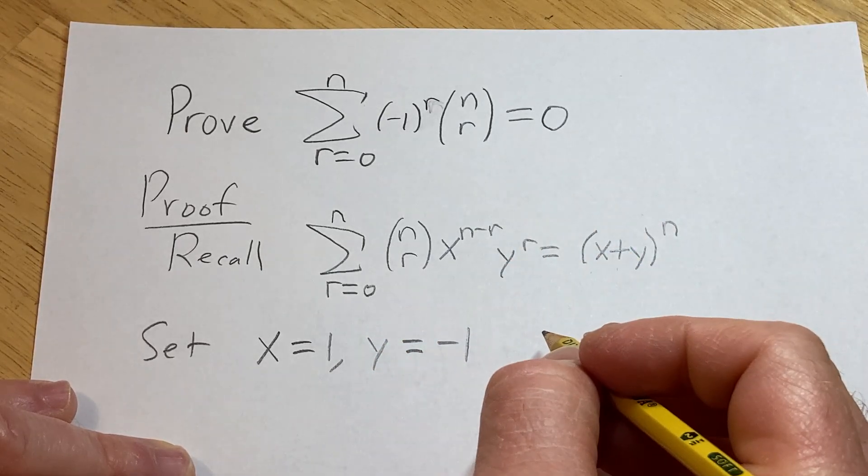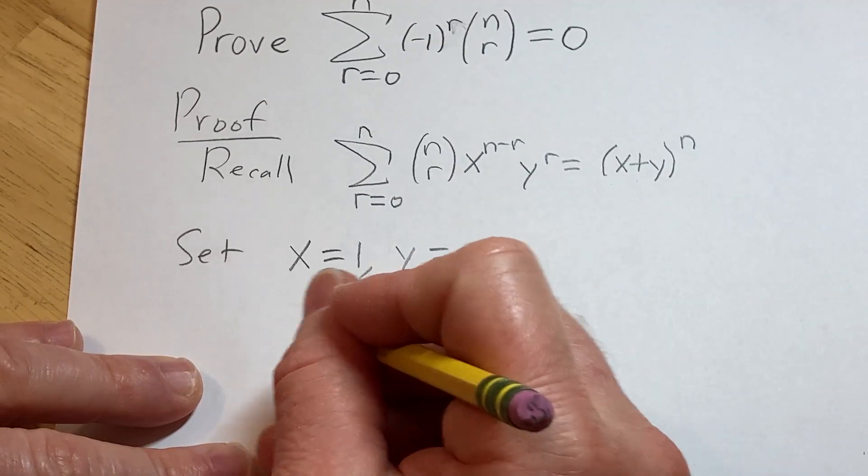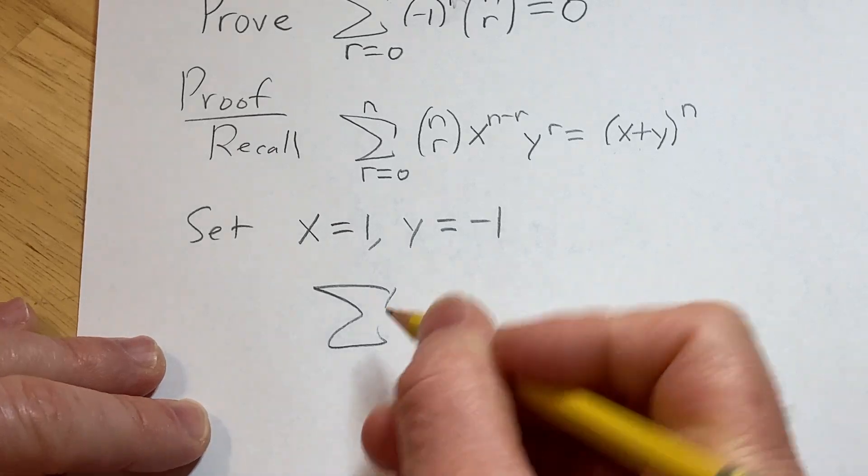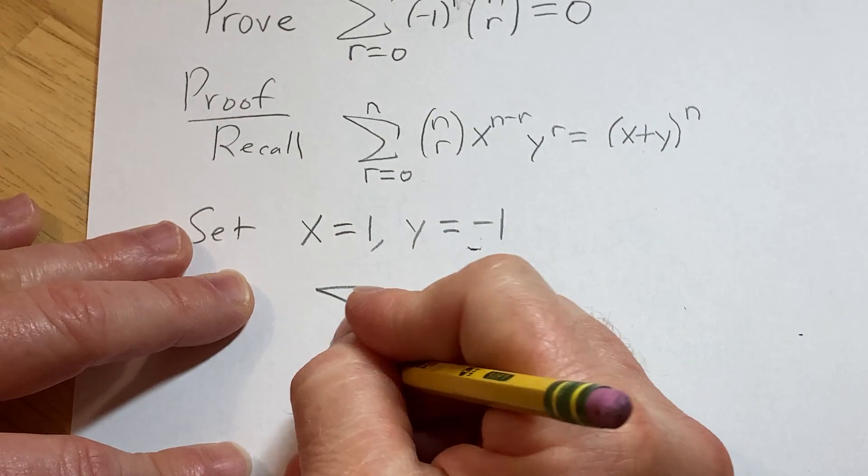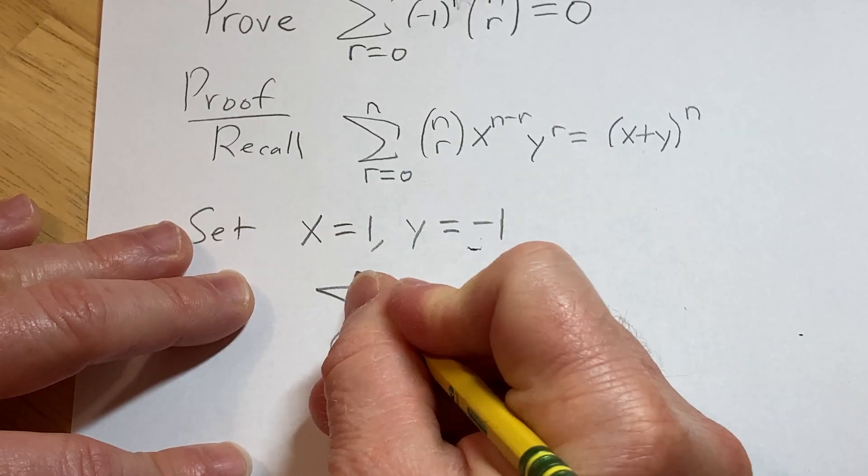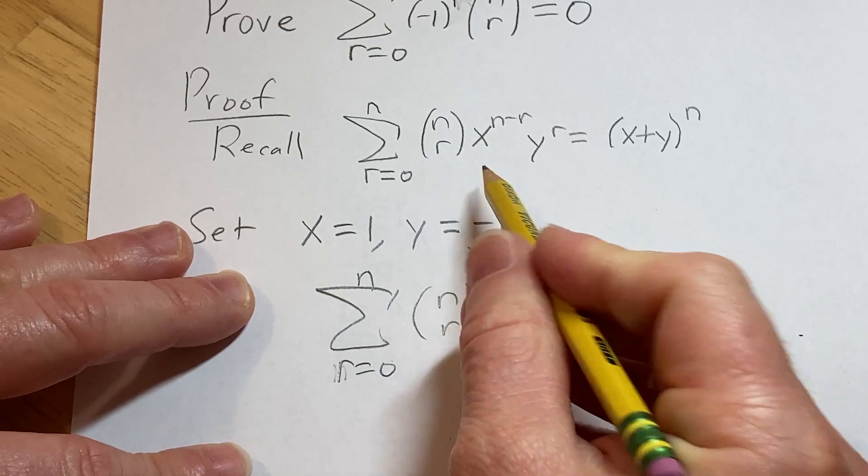And then in that case, let's see what happens. So we would get the finite sum, as r runs from 0 to n, of n choose r.